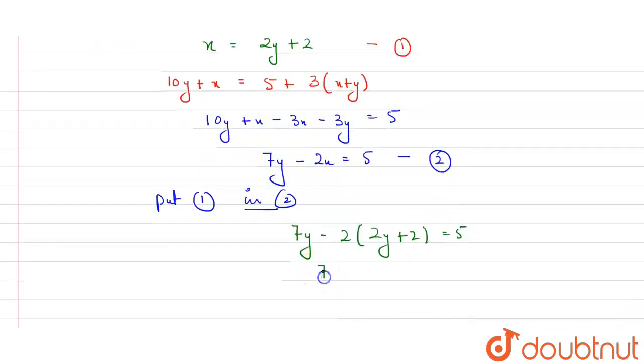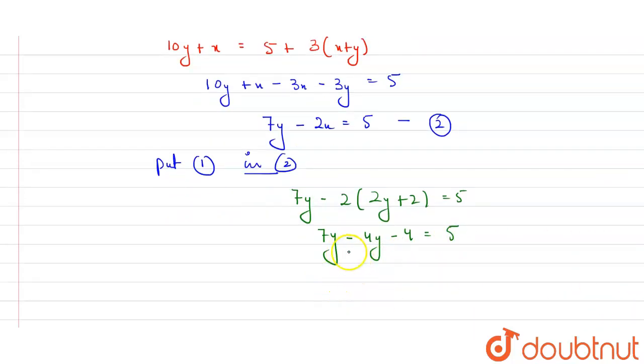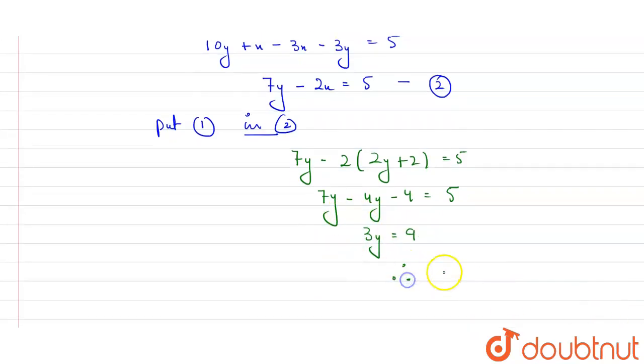Now further solve this. 7y - 4y - 4 = 5. Here 7 minus 4 will be 3y, and 5 plus 4 will be 9. So therefore from here we got the value of y, it will be equal to 3.